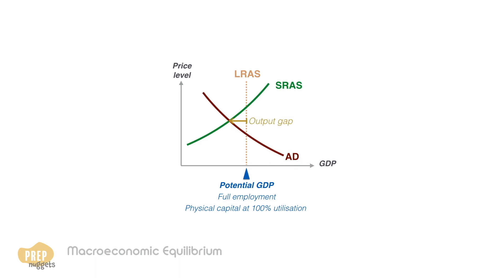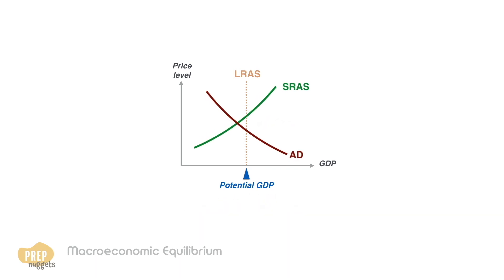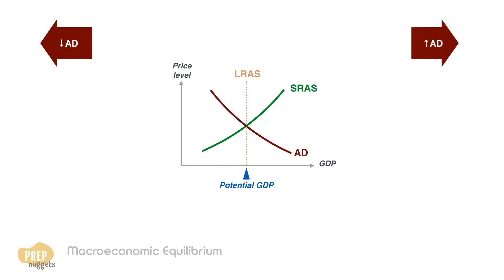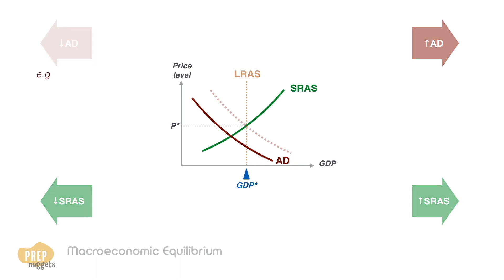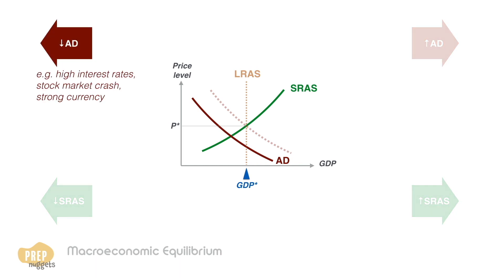We shall discuss four types of fluctuations and the corresponding effects on the economy: when aggregate demand decreases and increases, and when the short-run aggregate supply decreases and increases. For our first case, factors like high interest rates, a stock market crash, or a strong currency can cause aggregate demand to lower, shifting the curve to the left.